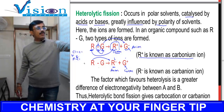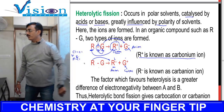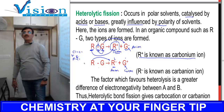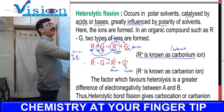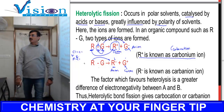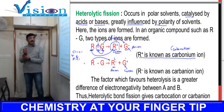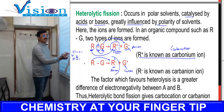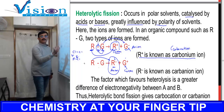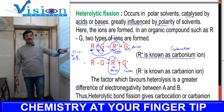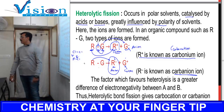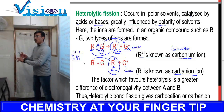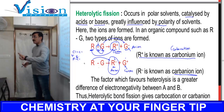A carbocation is also called a carbonium ion. Another name we use is carbo-cation. If instead an anion is formed on the carbon of an alkyl group, then it is known as a carbanion. So we should know: what is a carbocation, what is a carbanion, and what are free radicals.